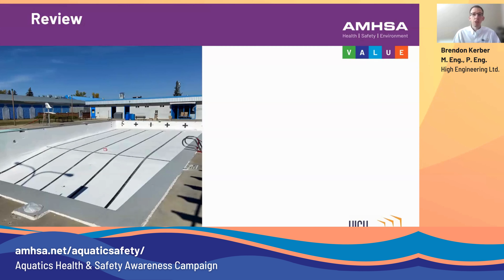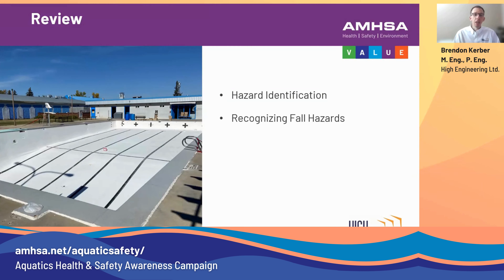We'll start with a brief review from webinar one, which was about hazard identification and slips, trips, and falls. We talked about identifying hazards, the OH&S requirements, and how an employer must provide a hazard assessment with employee participation. We discussed things like the energy wheel and ways to identify risk, recognizing different fall hazards such as proximity to the hazard, height, and landing area. We also looked at common hazards specific to aquatic centers. It's recorded on the website if you'd like to review it.